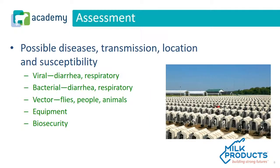The assessment part is thinking about what diseases can affect the animal and how they're transmitted from one animal to another. We think about location, susceptibility to different types of diseases — viral, bacterial, protozoal. Vectors are something that carries disease to an animal; flies are a typical one, and people are a big vector for carrying diseases from one farm to the next. We also need to think about the equipment being used and our ability to keep other people and animals away from the animals we value.